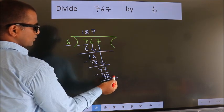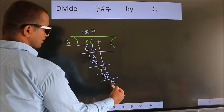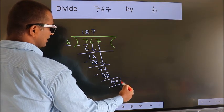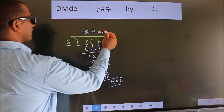No more numbers to bring down. So, we stop here. This is our remainder. This is our quotient.